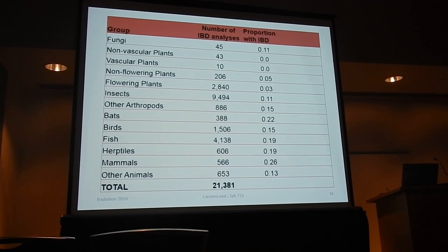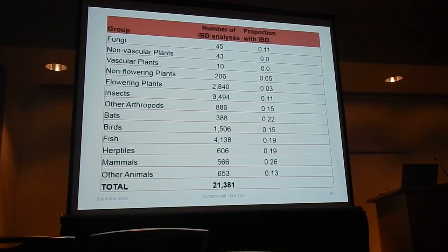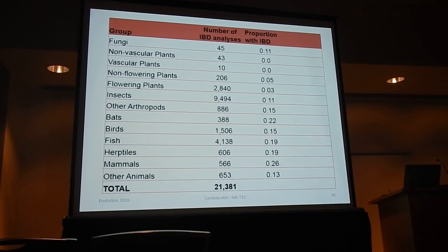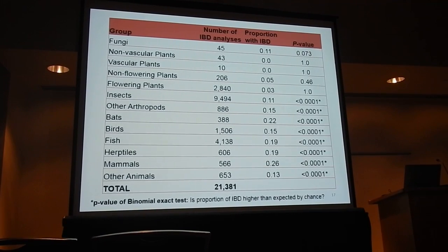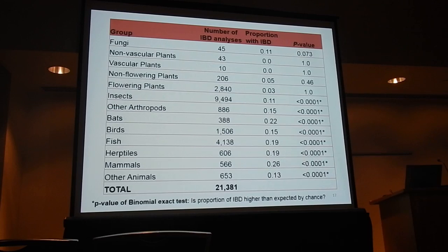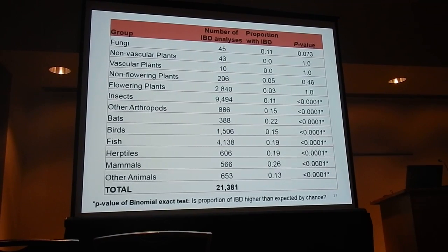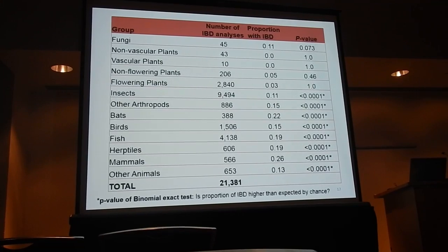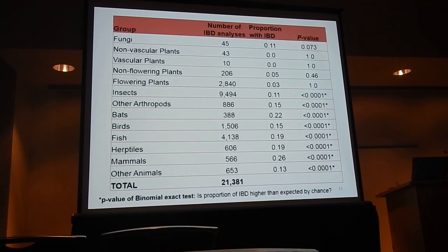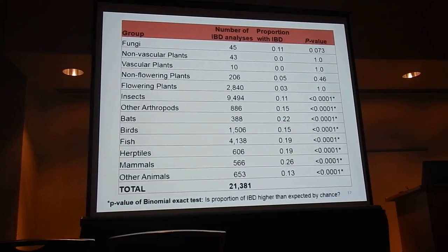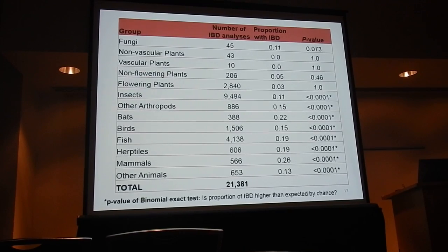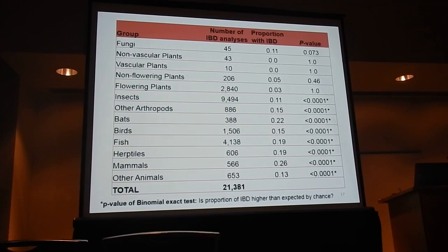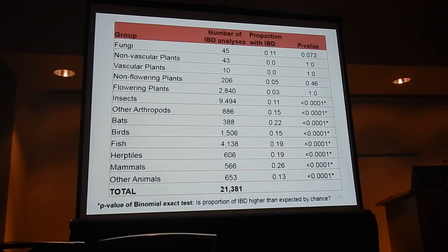Some groups show relatively high IBD, like mammals. Other groups show relatively low IBD — in some cases because we just don't have a lot of samples, but in other cases where we do have a lot of samples, the numbers are still low. Based on our exact binomial test, all animal groups have a number of species with isolation by genetic distance much greater than expected by chance. In the non-animal groups we don't see that. When we got these results we were glad to see the striking difference, and of course the next question was: why?